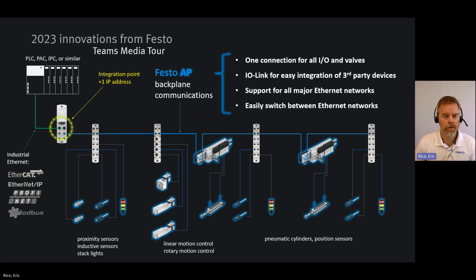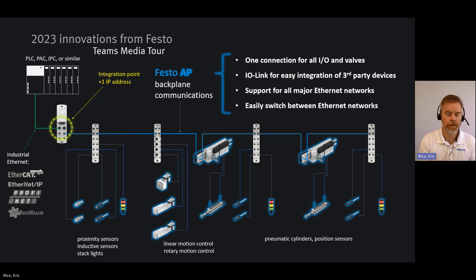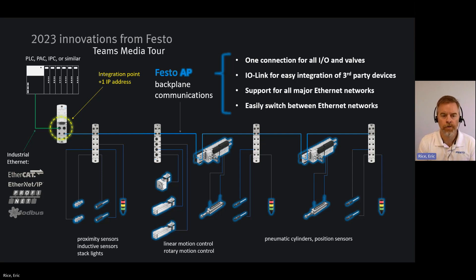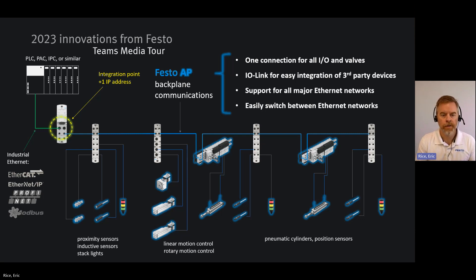We support all the major Ethernet networks and can easily switch between them. Think back to the diagram with all those yellow circles — each of those devices is an integration point, and each one has to speak the same protocol. If you're a machine builder building for a customer using EtherNet/IP today, all devices must speak EtherNet/IP. Next month, if you're building for a customer using PROFINET, you'd have to replace all those devices. With the Festo approach, the only thing you replace is the one bus interface device — everything below it remains the same. For OEM and specialty machine builders who must support multiple protocols, this ability to easily switch is a significant benefit.